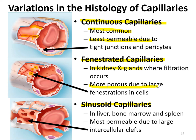Finally, sinusoid capillaries are found in the liver, bone marrow, and spleen, and they are the most permeable because there are huge clefts in between cells as well as the presence of large fenestrations. They allow large substances to cross the capillary wall. For example, the spleen is a location where white blood cells and red blood cells aggregate and are stored, so blood cells have to be able to exit the bloodstream and enter the spleen tissue. The same is true in the liver and bone marrow.